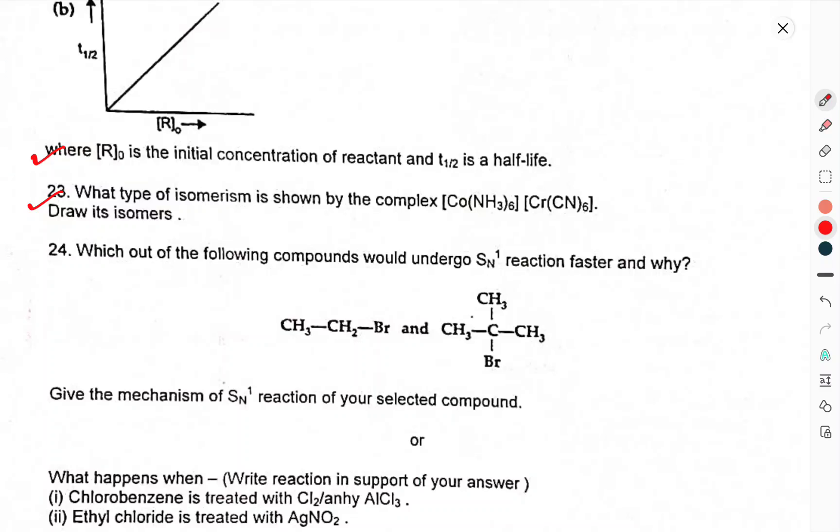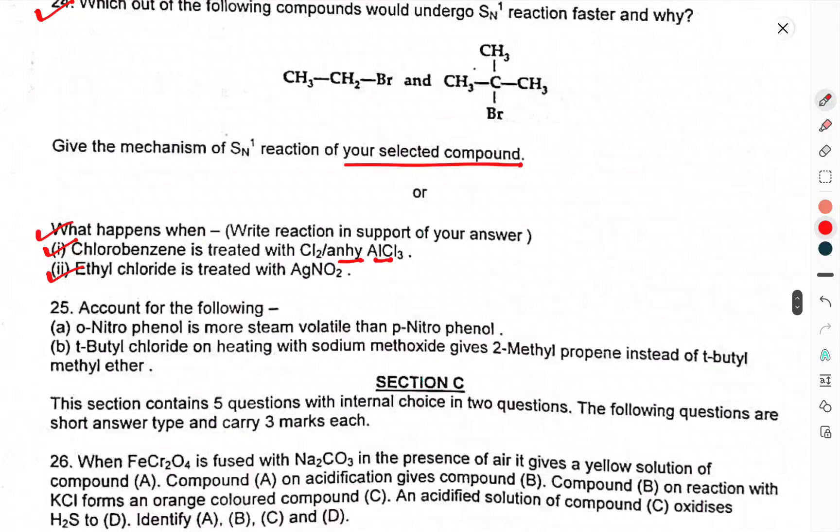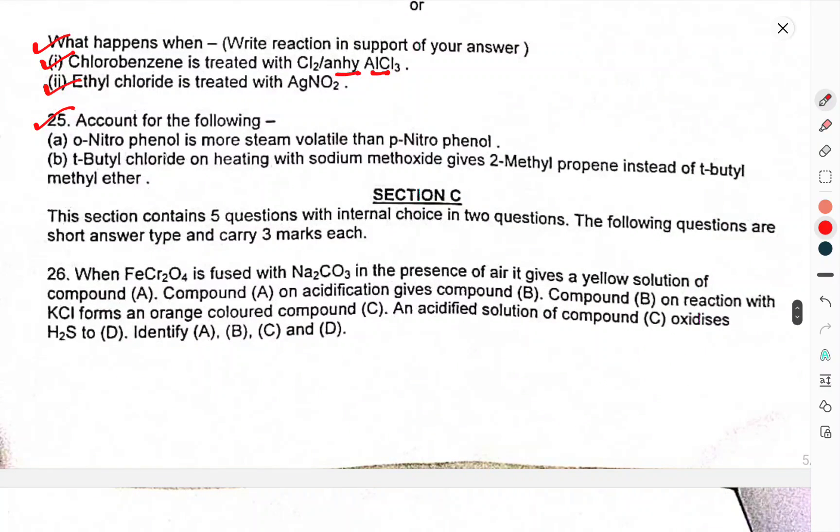Question 23: What type of isomerism is shown by the complex [Co(NH3)5(NCS)]²⁺? Draw its isomers. Question 24: Which of the following compounds would undergo SN1 reaction faster and why? Give the mechanism for SN1 reaction of your selected compound. Or, what happens when - write reactions in support of your answer: Chlorobenzene is treated with Cl2 and FeCl3, Ethyl chloride is treated with AgNO3.